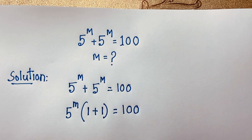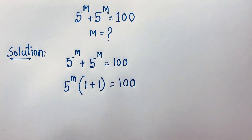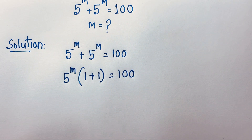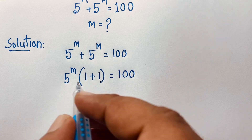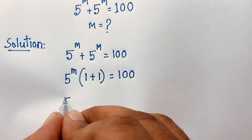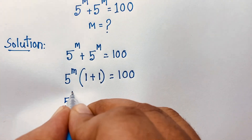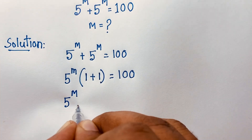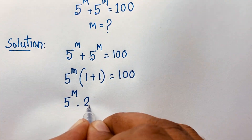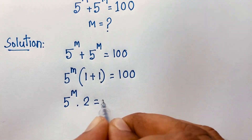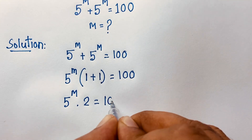Now, 1 plus 1 will be 2. So 5 to the power of m times 2 is equal to 100.